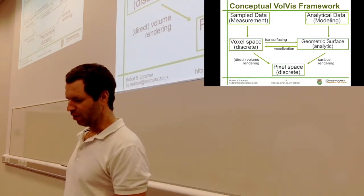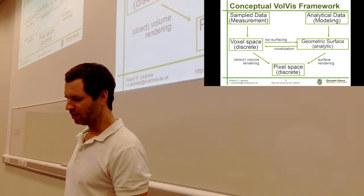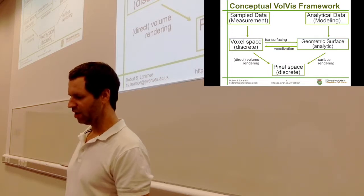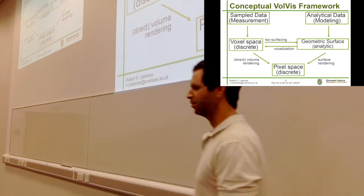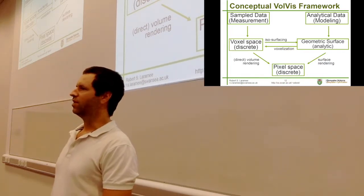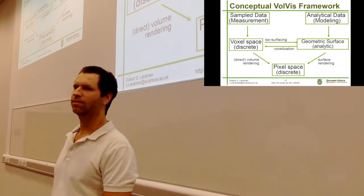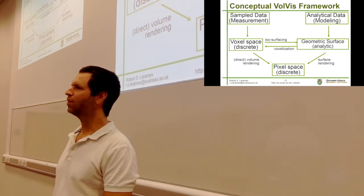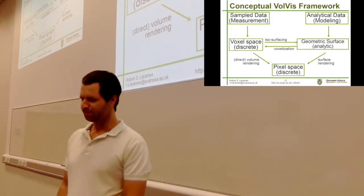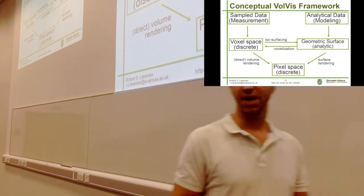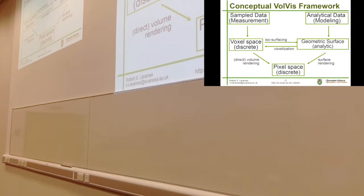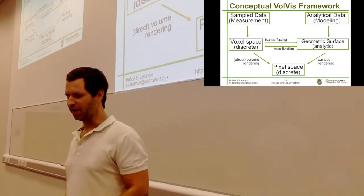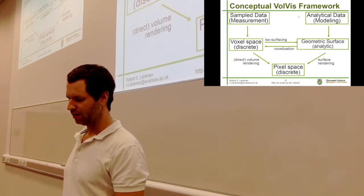There are two starting points. One is sampled data or measured data — that's data derived from an instrument, like the x-ray mentioned in the last lecture. There's also another source: analytical data or modeling, derived from mathematical models and equations. That's like the first stage of the viz pipeline: data acquisition — a more specific version of it. What's not shown here is the data enhancement phase, but it does actually exist in practice, and that's part of assignment two.